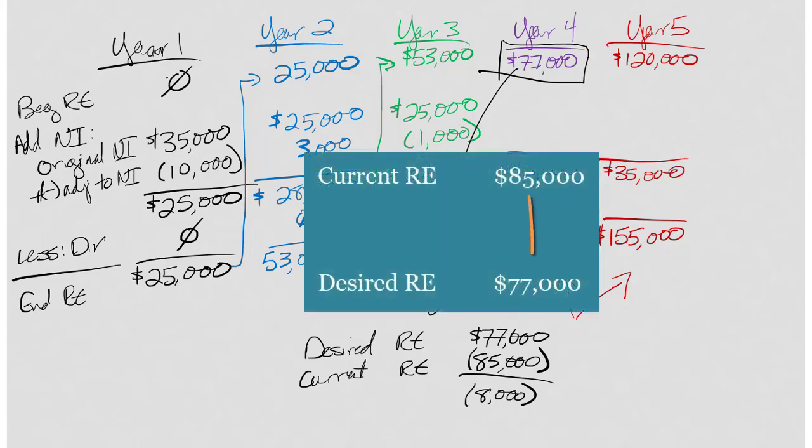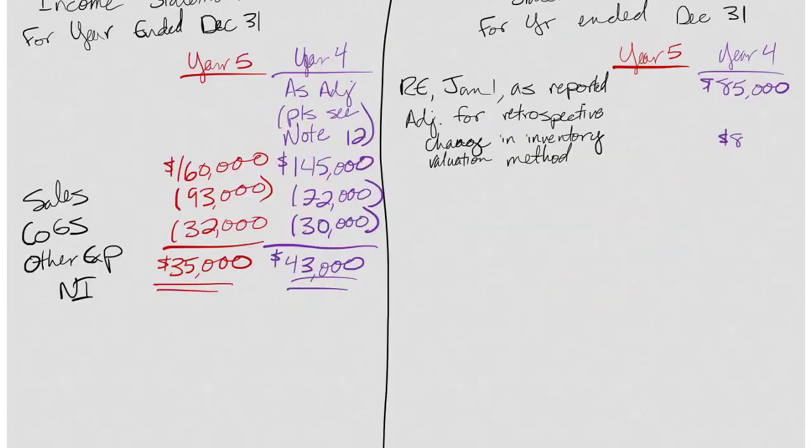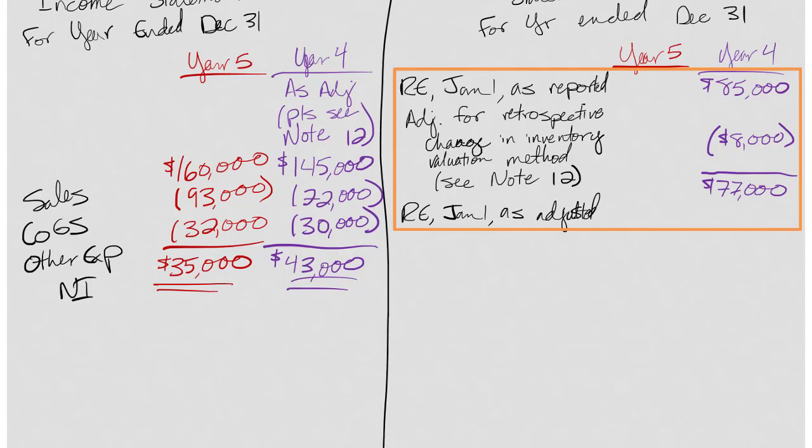So I'm going to do a quick calculation. I always start with the new number, what I want it to be so my sign will come out right. My desired or updated retained earnings is $77,000. The current retained earnings is $85,000. I subtract desired minus current. Negative $8,000 makes sense because I want to go from 85 down to 77. So this $8,000 is what goes here as our adjustment. And I need to add see note 12, because that's where we're sending our investors to explain this change.